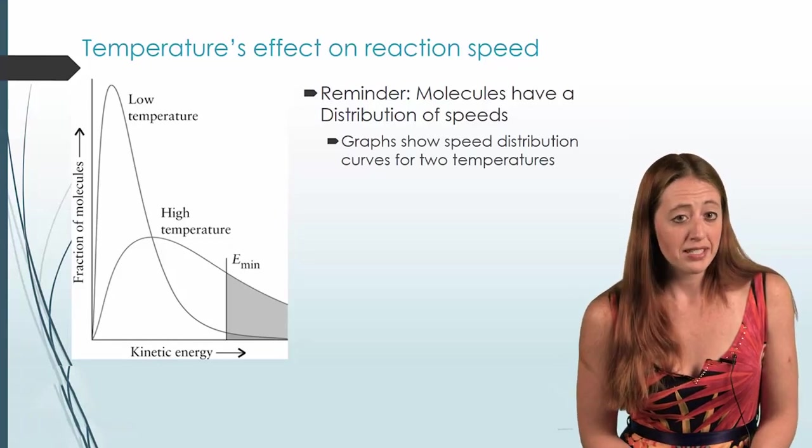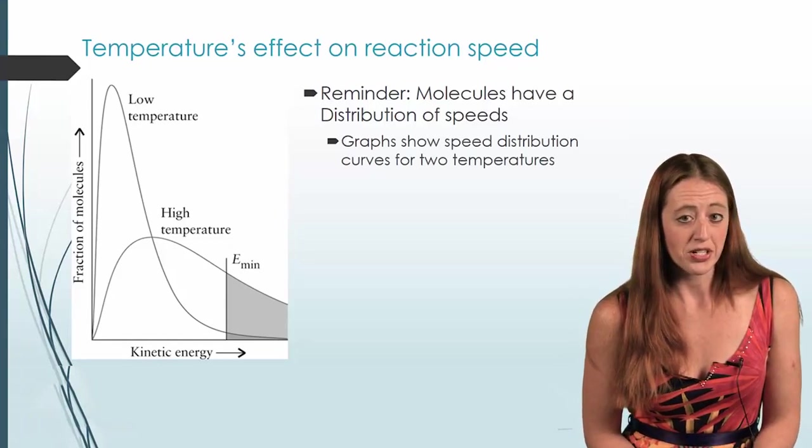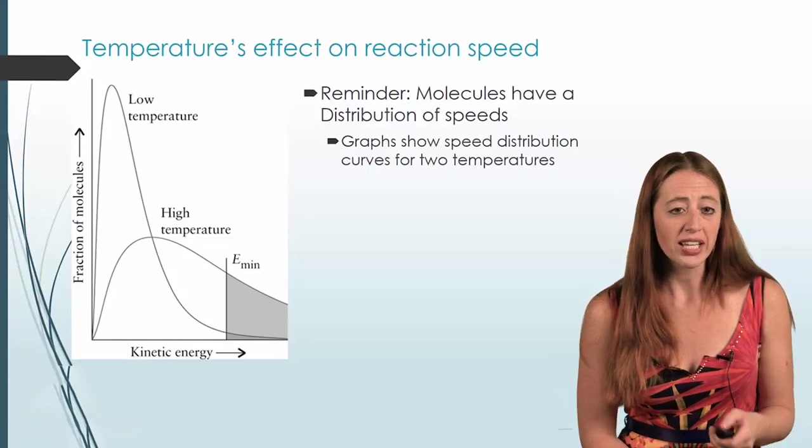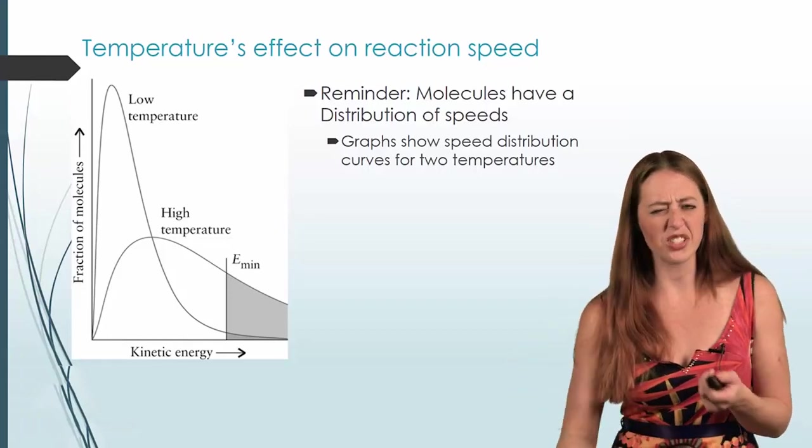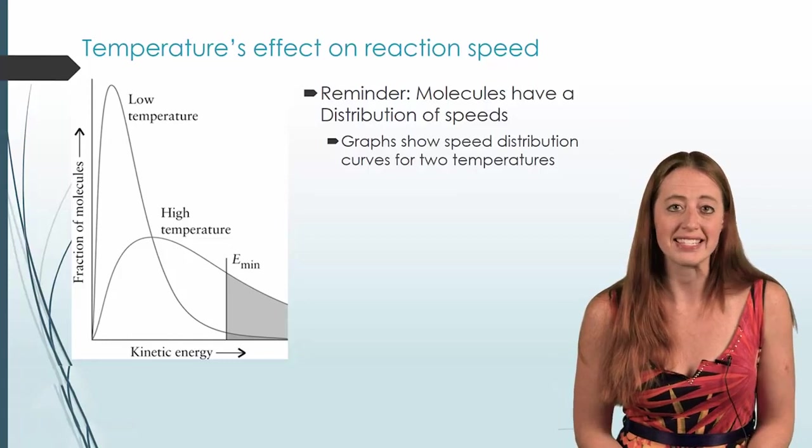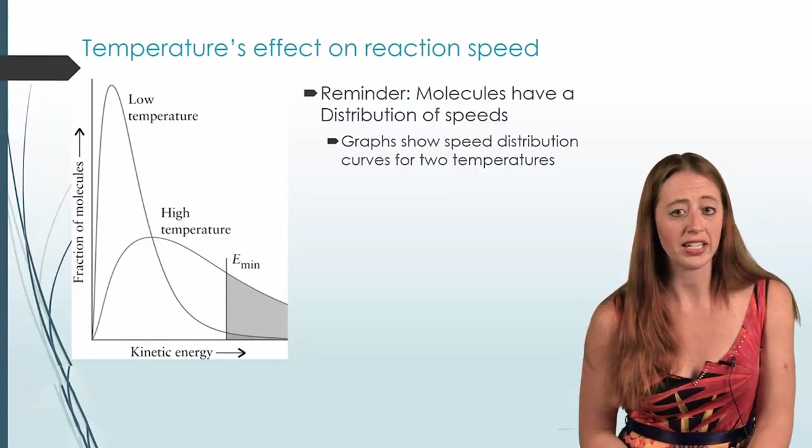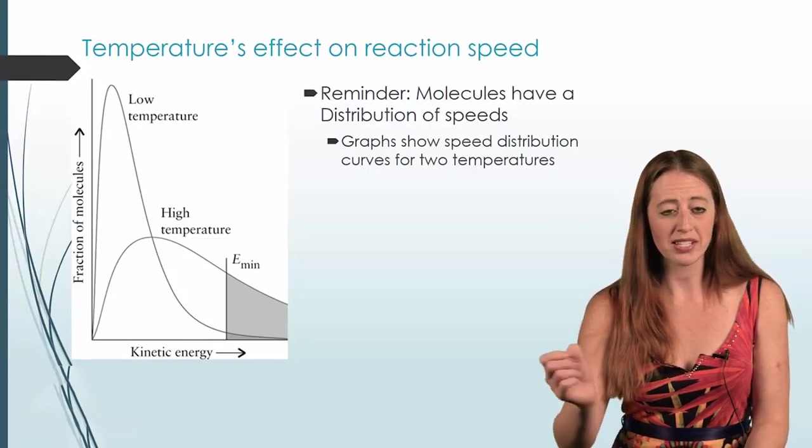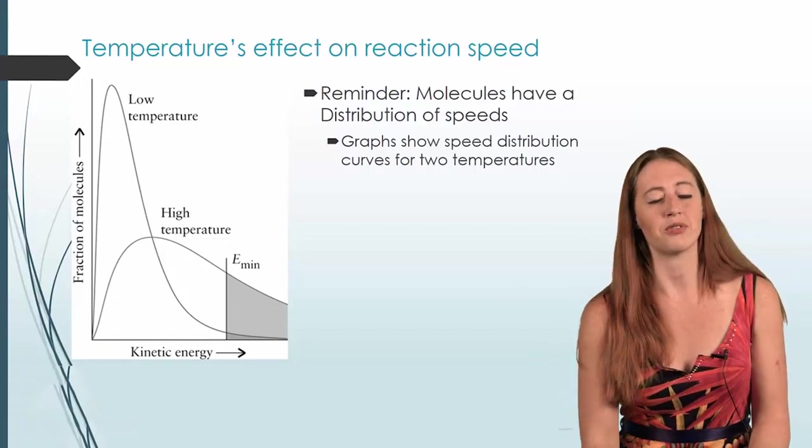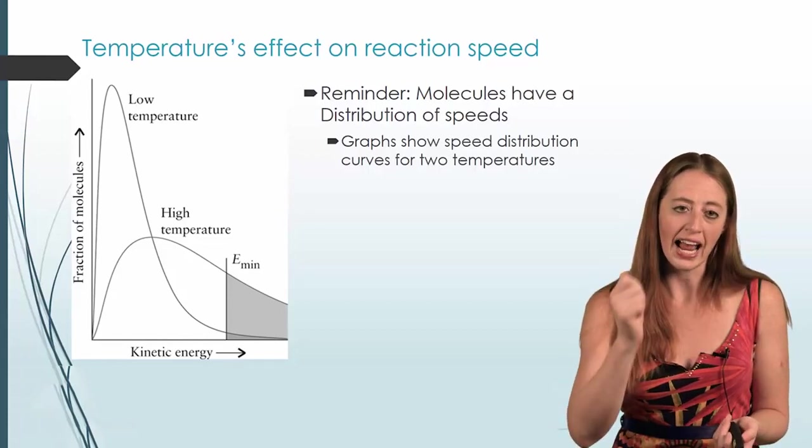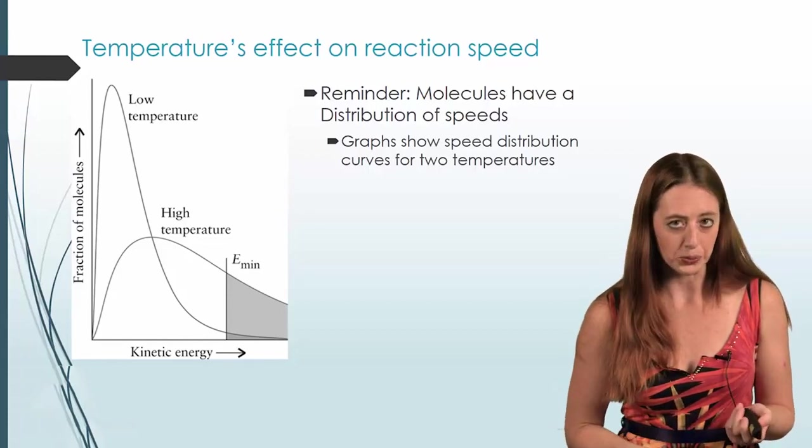Our graphs show speed distributions for two different temperatures, and I have a piece colored in. That E_min that I have drawn is the new thing on this graph, the part you haven't seen before. That is our minimum energy needed to react. We've set a sketch point - there's no numbers here, so it's not any specific thing - but a sketch point saying that at this energy, these molecules will react.